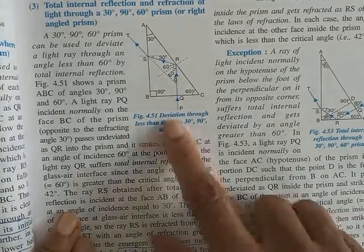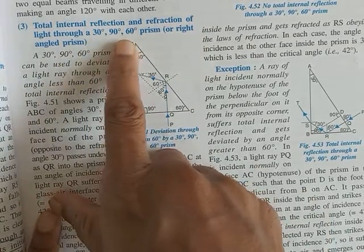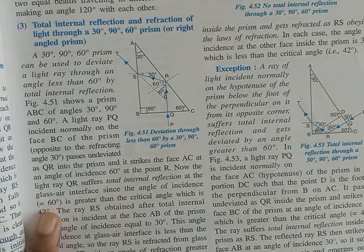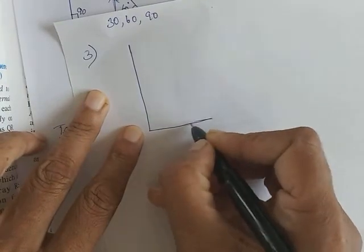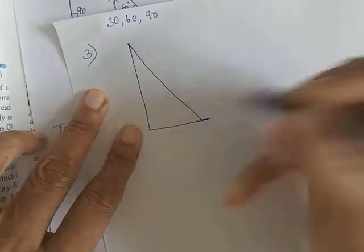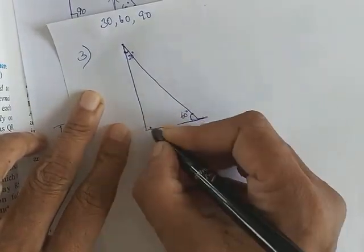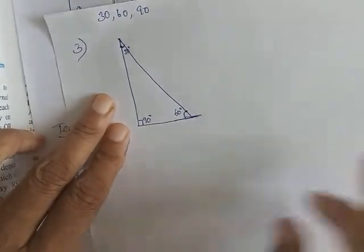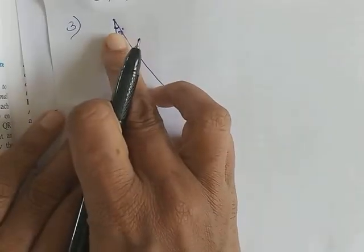We are left with one type of prism: total internal reflection and refraction through a 30-60-90 prism. We saw the 45-45-90 and the equilateral prism; now the third type is the 30-60-90. When you draw this triangle, be careful — the side opposite the 30° angle should be quite short, the side opposite 60° slightly bigger, and 90° is the right angle.